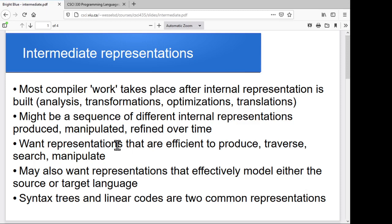We need these internal representations to be efficient to produce. We don't want it to be insanely slow to produce these things during the compilation process. We want it to be easy to go through and traverse them, to search them, to manipulate them, to work with them.